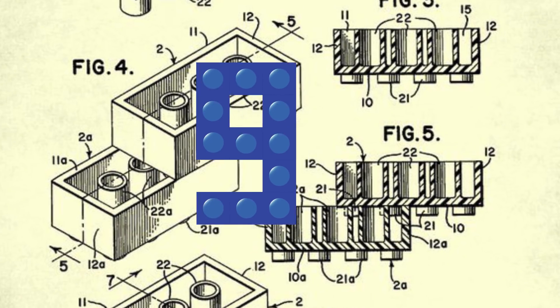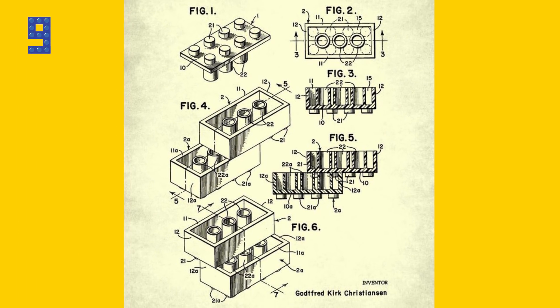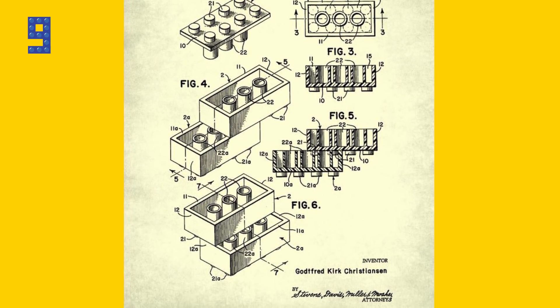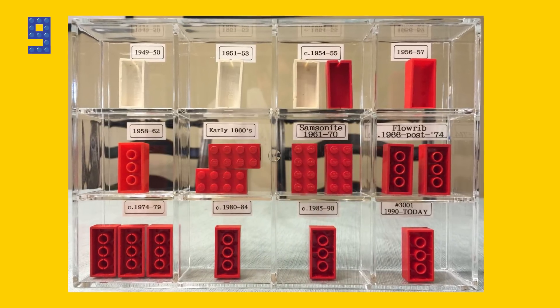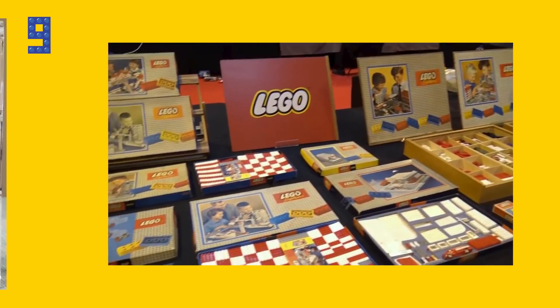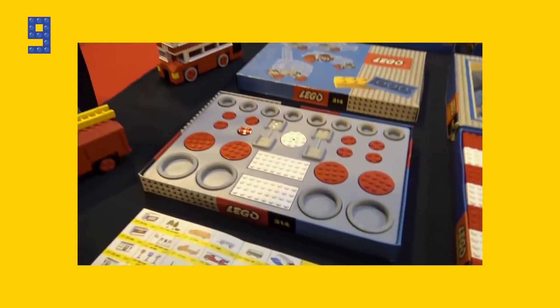Number 9. The first Lego brick was created in 1958. The original is so perfect and universal that we can still connect it to bricks from today. Yes, all Lego bricks ever made are perfectly compatible with each other.